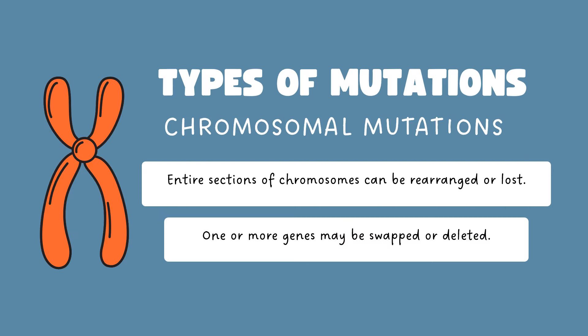The second type is chromosomal mutations, where entire sections of chromosomes can be rearranged or lost. One or more genes may be swapped or deleted.